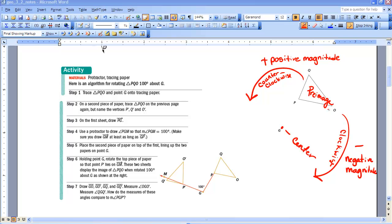So here, I've taken a figure, and I've marked it all up. What I have here, to begin with, was a triangle. We call that triangle PQO. And we have this center point here, G.